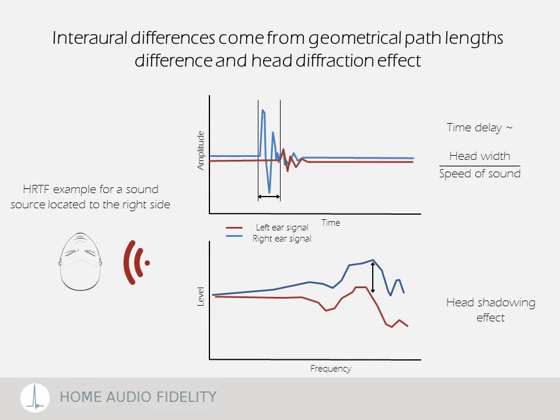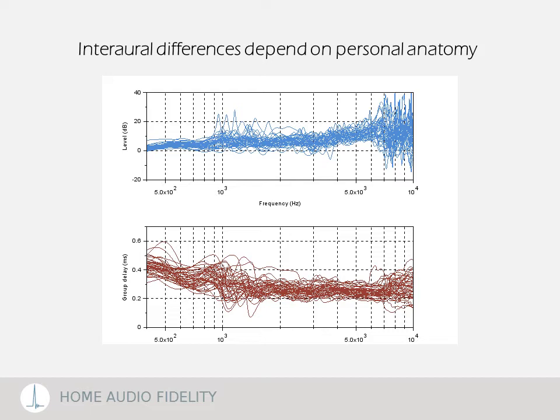The anatomy influence is clearly visible on these graphs presenting the inter-aural differences for a set of individuals. This is an illustration of the left to right ear's differences for a standard stereo listening setup. This variability is both visible in the frequency domain — top graph — and time domain — bottom one.